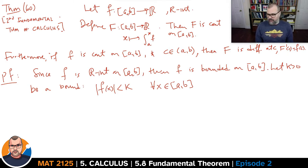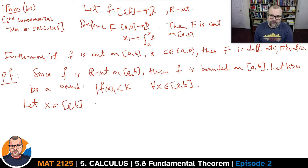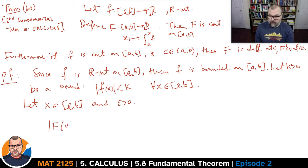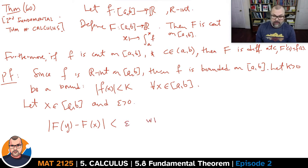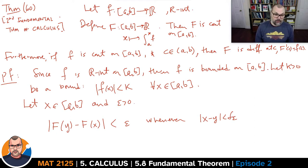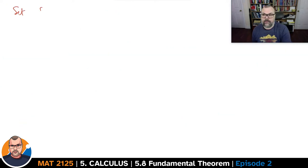So the absolute value of f at x is smaller than K for every x in the interval. Now we show that the function capital F has to be continuous. Let x be a specific point and epsilon be greater than 0. If we want to prove continuity, we're going to use the epsilon-delta definition. We need to show that |F(y) − F(x)| will be smaller than epsilon whenever |x − y| is smaller than delta-epsilon, which will mean that uppercase F is uniformly continuous on the interval. So set delta-epsilon to be epsilon over the bound K.